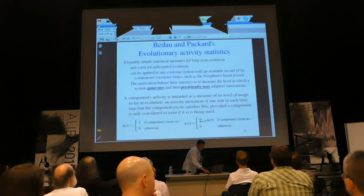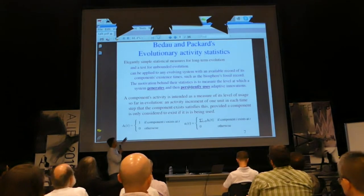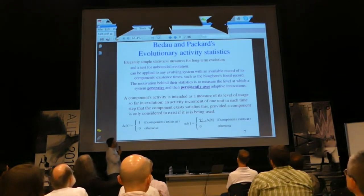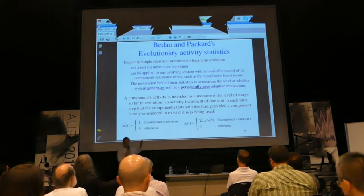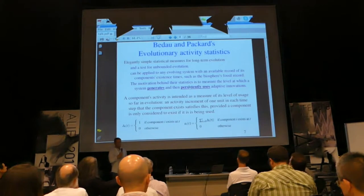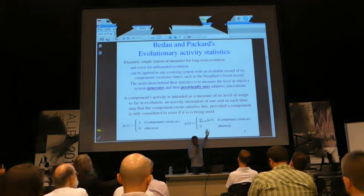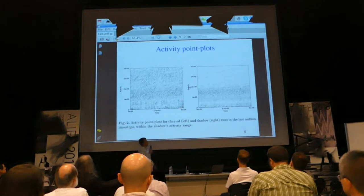Around about that time, Mark Bedo and Norma Picard were coming up with their evolutionary activity statistics, and they're really elegant. They can be applied to any system and help you visualize what's going on with the components within your system. In my system I use a gene as a component. They're based on really simple things: does a component exist at a time or not? Adding up over time steps whether or not that exists is enough to visualize a little bit about what's going on inside your system.